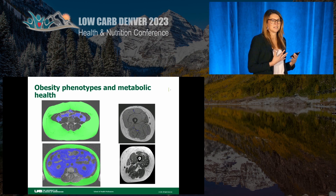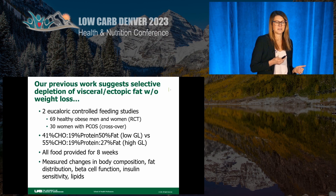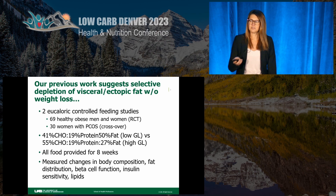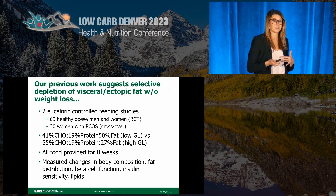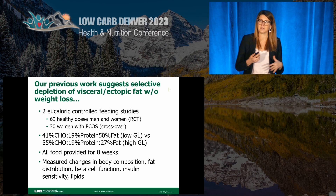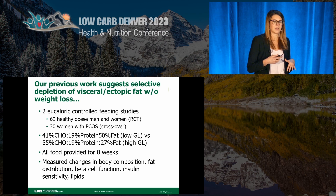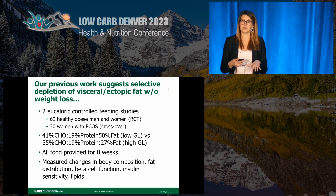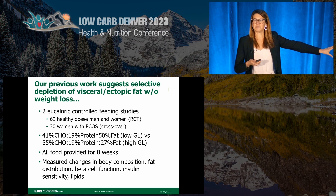When I was a graduate student, my mentor Dr. Barbara Gower, who is also at UAB, had two funded R01s doing controlled feeding studies in two different populations. Both were eucaloric, weight-maintaining diets where we were specifically manipulating the glycemic load and the carbohydrate and fat content. In one controlled feeding study, we recruited 69 healthy, overweight, and obese men and women in a parallel arm randomized clinical trial, randomized to low-glycemic versus high-glycemic load diet. Another study was in women with PCOS — a crossover intervention using the exact same dietary strategy.